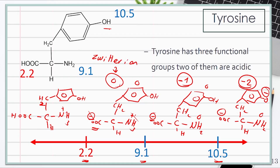For the fully protonated form, we have plus and plus, and 0, and another 0, which means the total charge is equal to plus 1. Notice that the charge is decreasing from left to right: plus 1, 0, minus 1, then minus 2. Now let's calculate the isoelectric point of tyrosine.